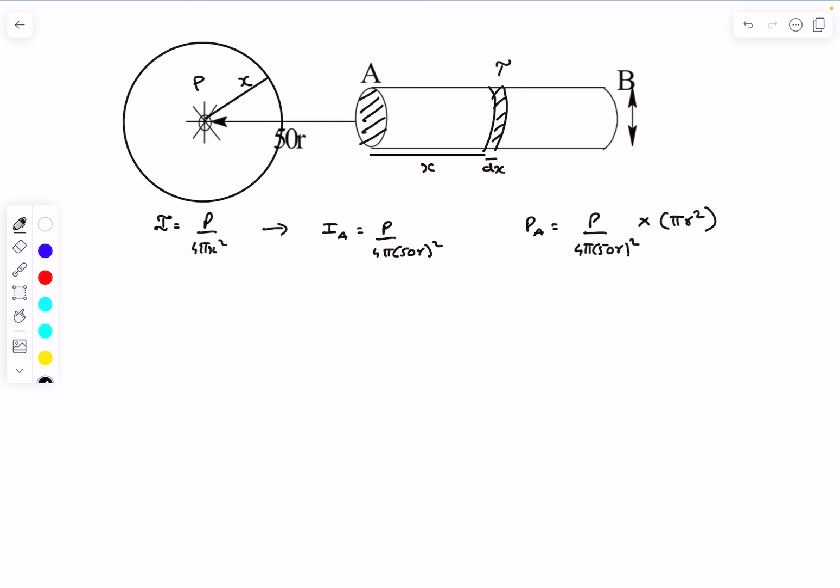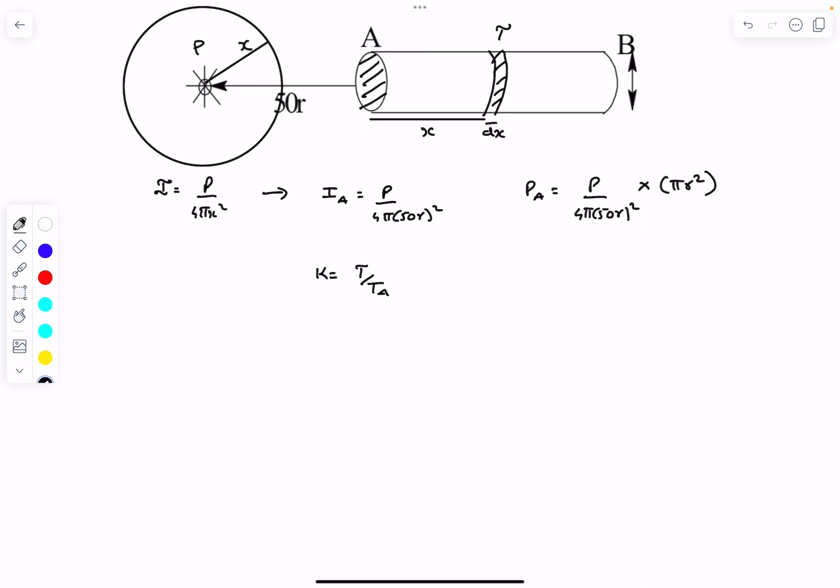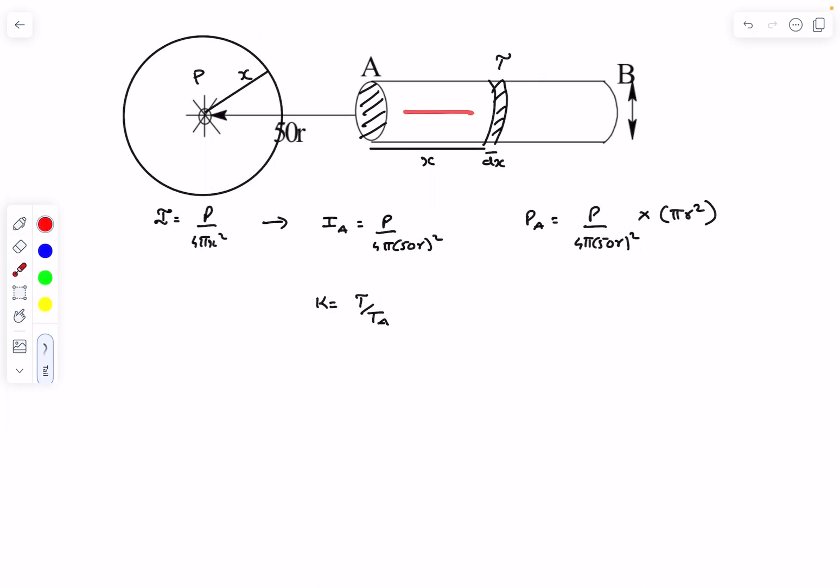Let's just say the temperature at this point is T. It was given in the problem that the thermal conductivity was a function of the temperature. Now in the question it was given that the rate of heat flow through the cylinder is steady. Now what that essentially means is that the heat flow rate through the cylinder, Q dot, is the same at each particular point.